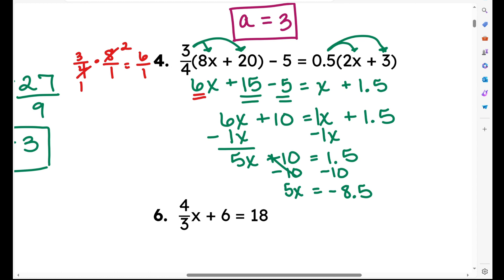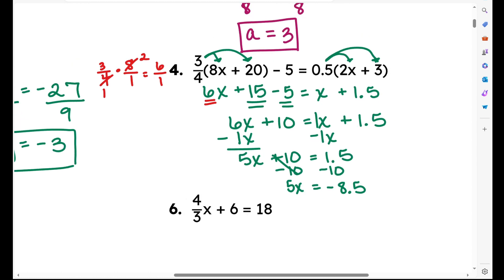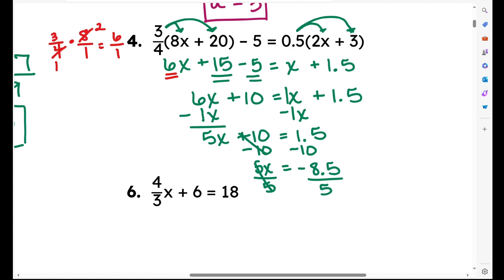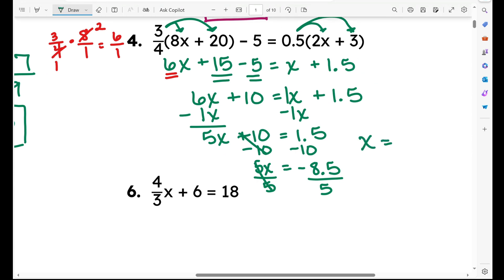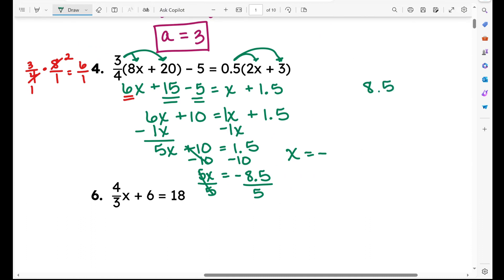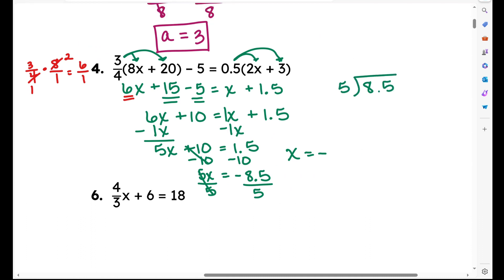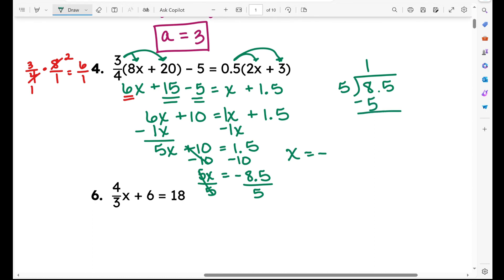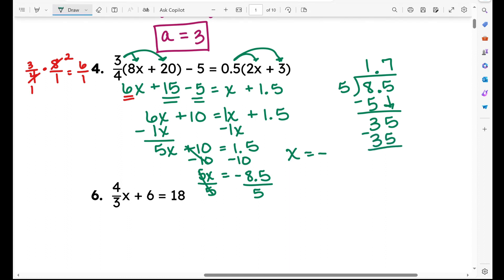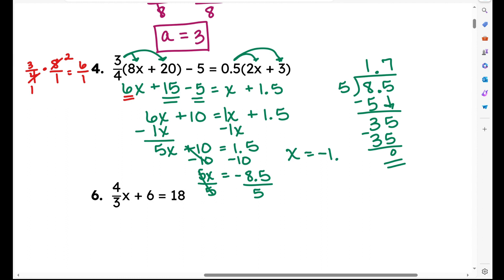I do have a tutorial video on integer rules and I'll link that in the upper right corner. Now we need to divide both sides by 5: negative 8.5 divided by 5. I know my answer is going to be negative, so let's do the actual dividing. 8.5 divided by 5: 5 goes into 8 one time, 1 times 5 is 5, subtract to get 3, bring down the 5, the decimal goes straight up, and 5 goes into 35 seven times. My answer is negative 1.7.